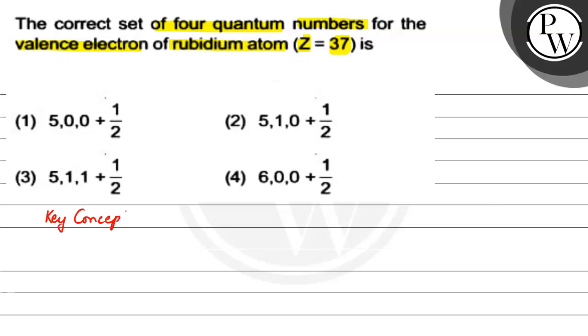We have to use electronic configuration. Just have to write the electronic configuration and then we will know. So for rubidium atom, we have Z equals 37.